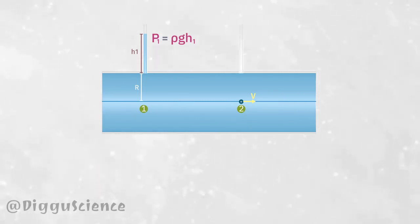If the piezometer is also installed at point two, the water height on the piezometer is h2, where h2 is less than h1. The piezometer reading is rho g h2.